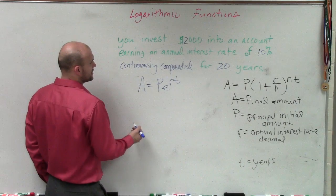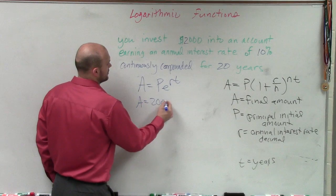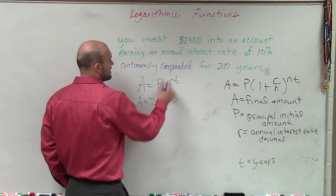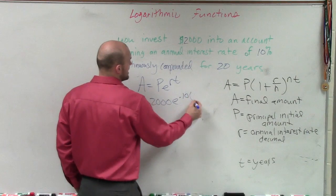So therefore, exactly, I go back through here. My p is my initial amount. So a equals $2,000 times e times my rate, which is 10%. So it would be 0.10 times t, which is 20.